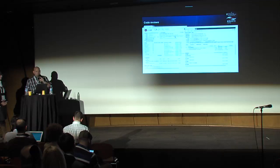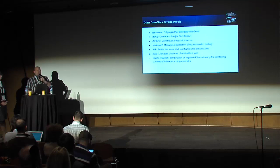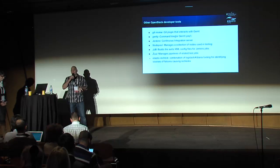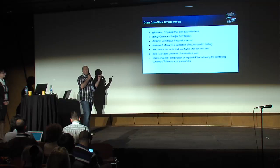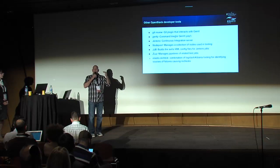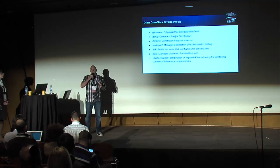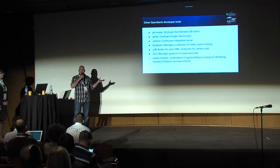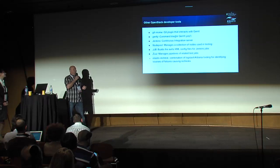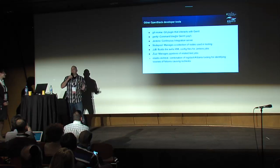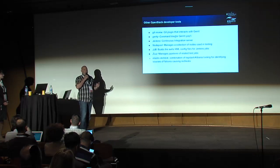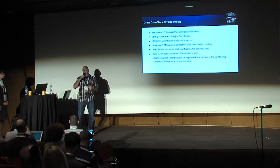Git-review is a Python plugin for Git that we use to interact with Gerrit. Gertty is a command line tool for doing code reviews in Gerrit offline — I actually switched from the web interface to Gertty. You can do reviews offline on a plane and as soon as you come online, it publishes all your code reviews. JJB, NodePool, and Jenkins are facets of our upstream continuous integration system — check out ci.openstack.org for documentation.